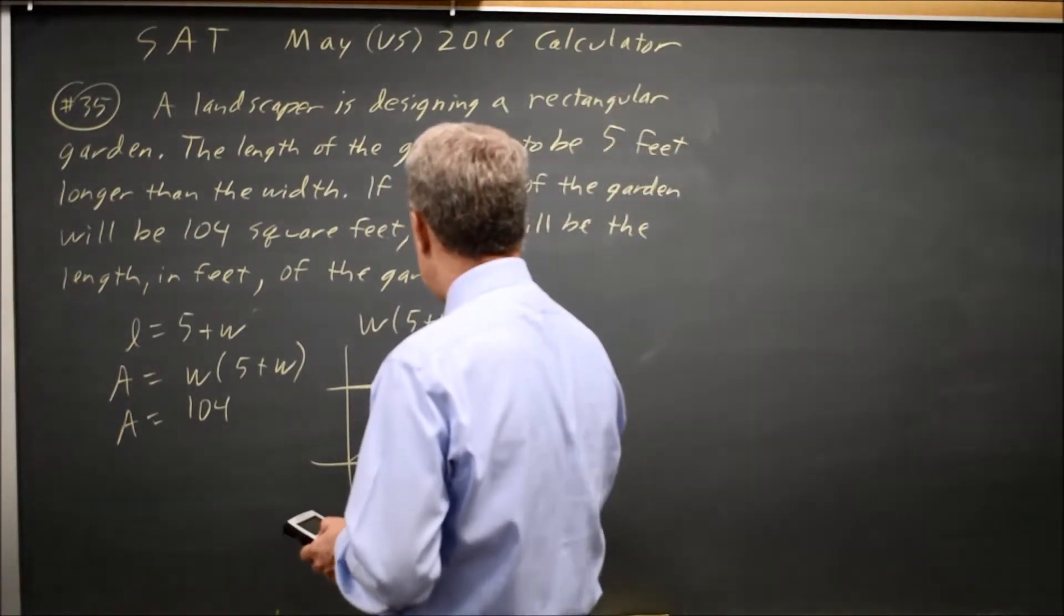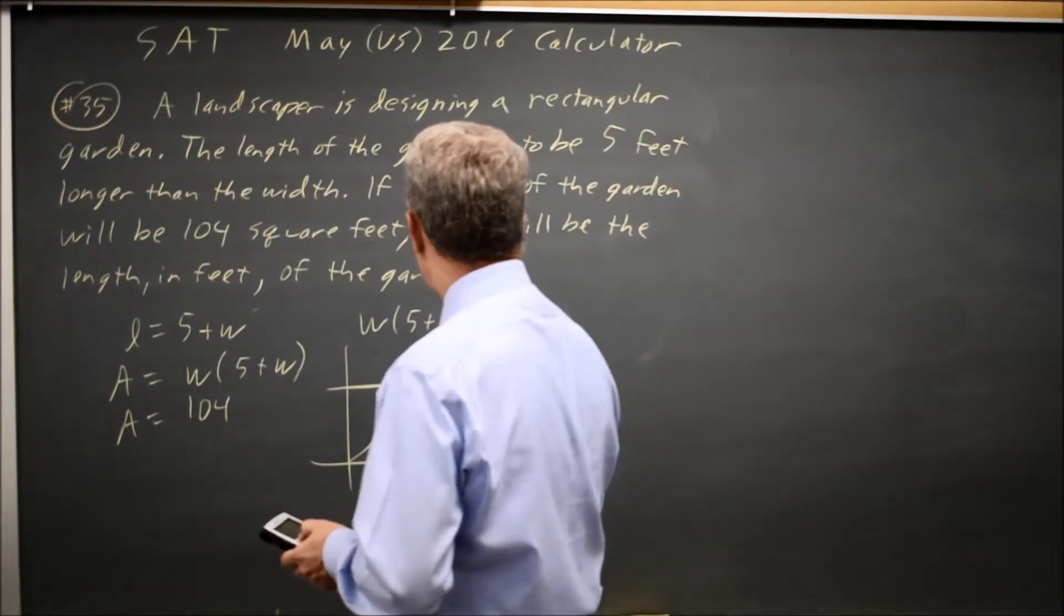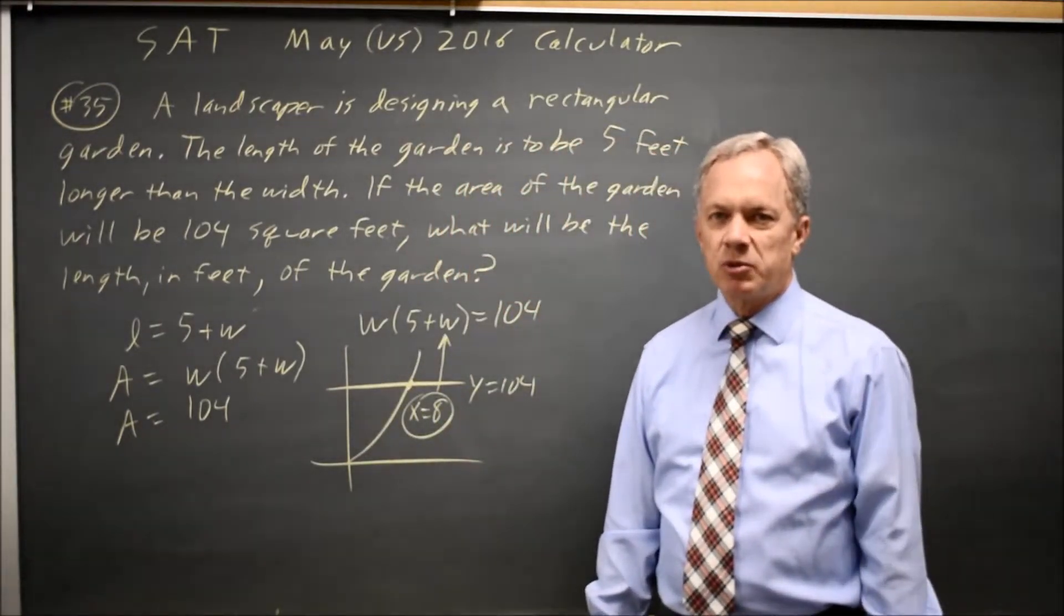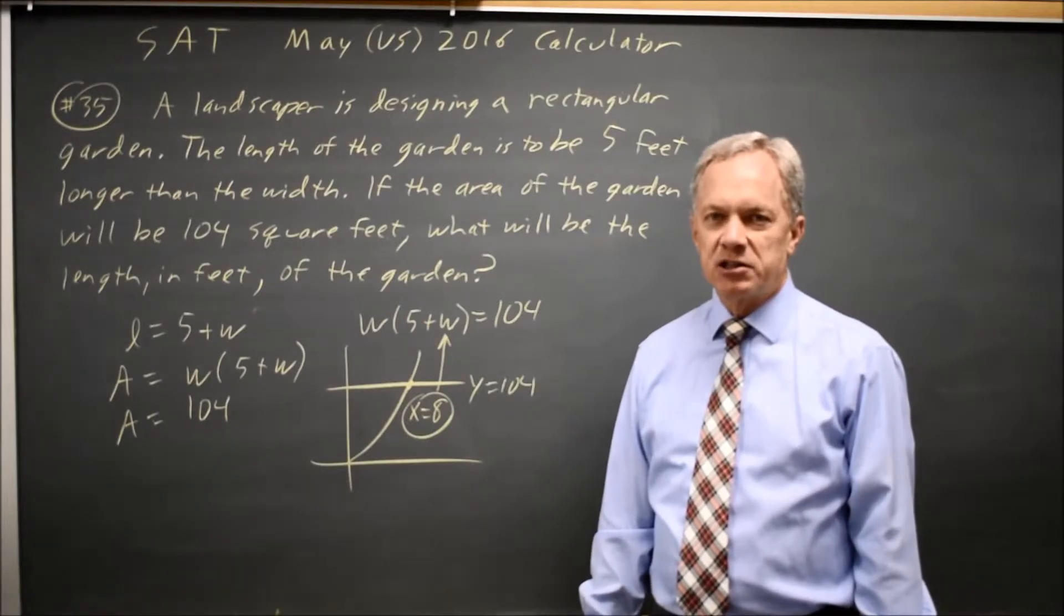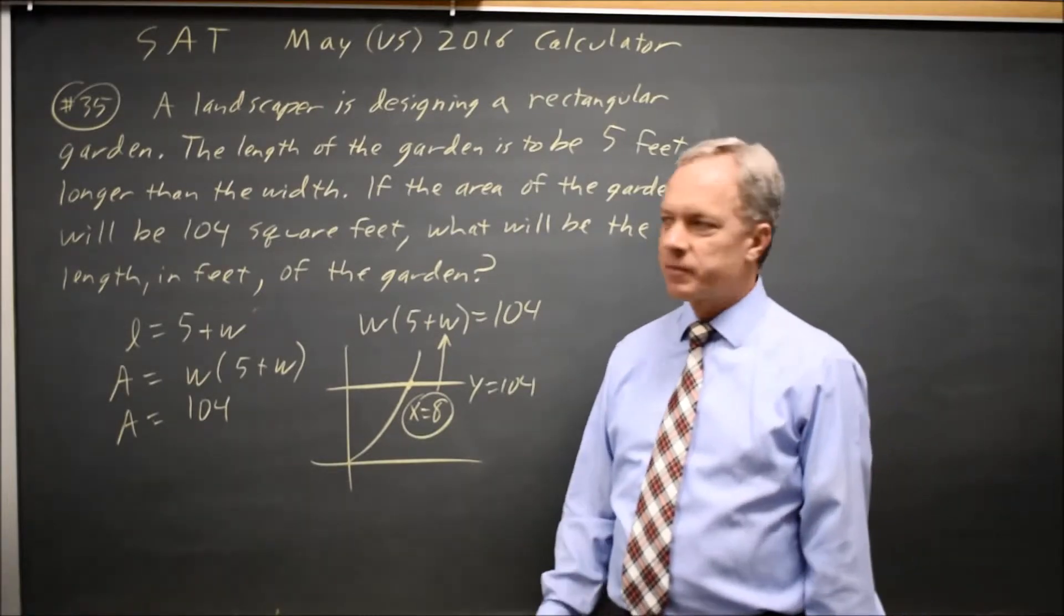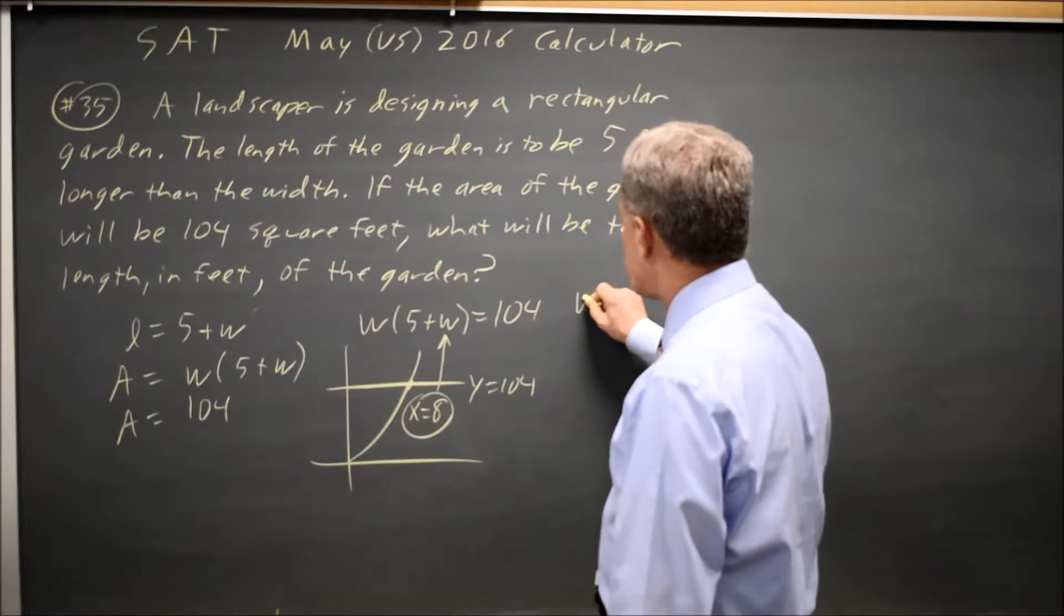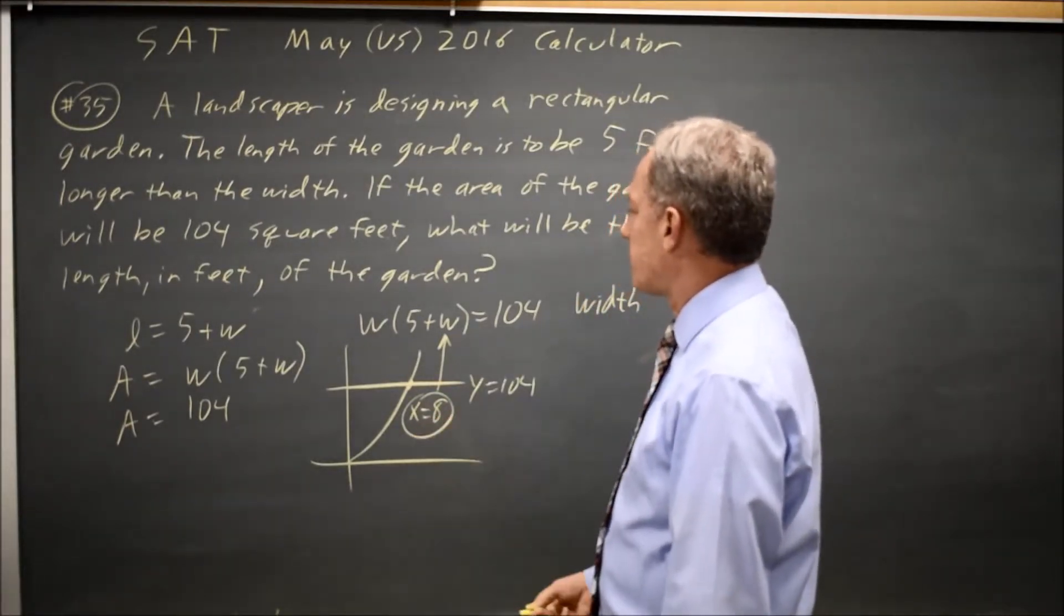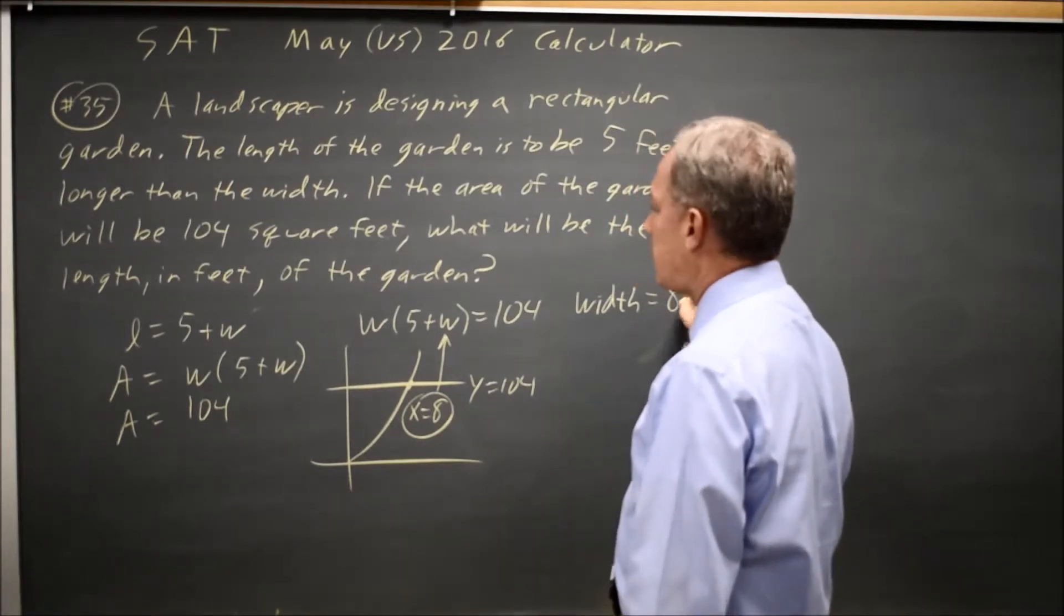I hit enter three times to get X equals 8, where X is the variable in my equation. Anytime I have an equation with only one variable, finding the X value of the intersection will give me the value of that variable. Now, the width is W, which I just found as X on my graphing calculator, and that is 8.